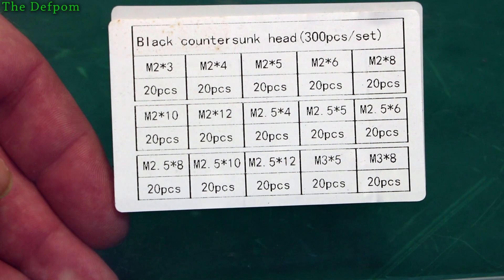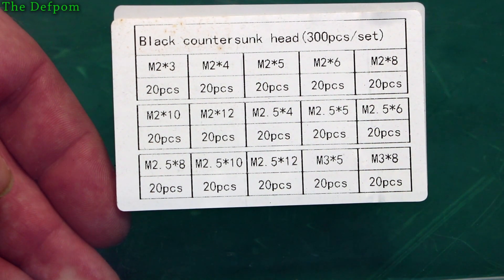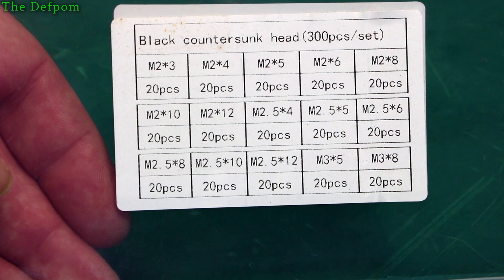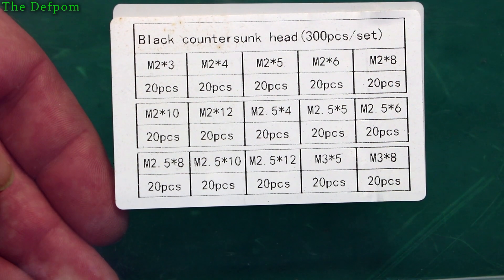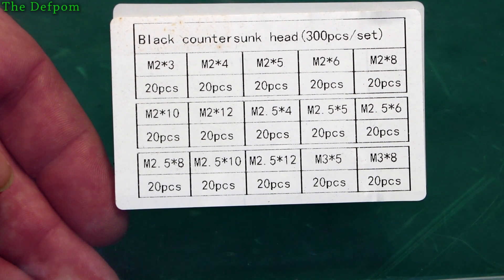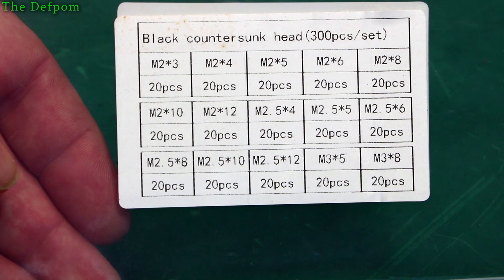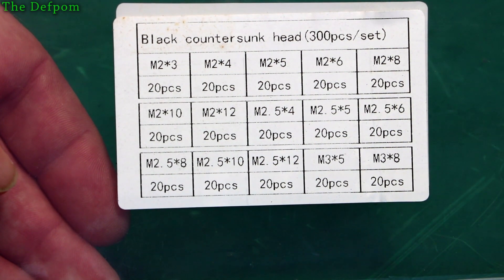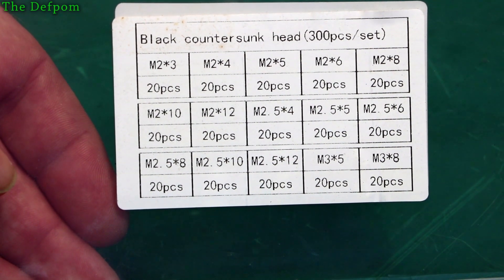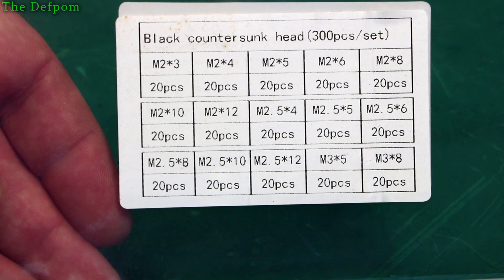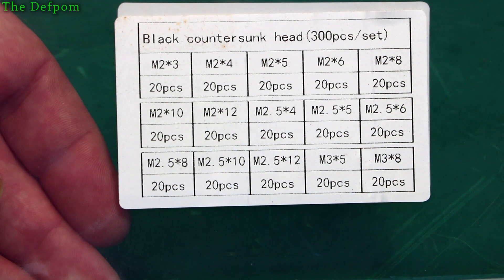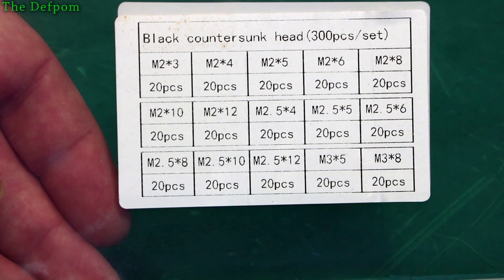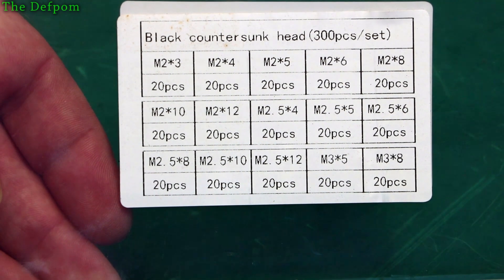Ignore the sticker on the front, we'll look at the back. So we've got 2mm by 3, 2mm by 4, 2mm by 5, by 6, by 8, 10, 12, and 2.5 by 4, by 5, by 6, by 8, by 10, by 12, and 3mm by 5 and by 8. So it's a nice little small set, and these are all countersunk screws, which are a little bit more unusual, but handy to have.